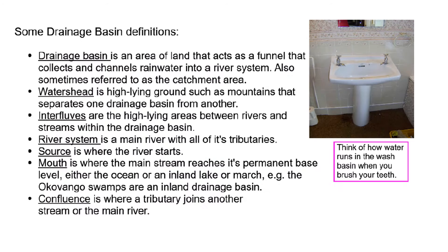If you go to the next slide, we've got the definitions here. We've first got the drainage basin itself. I like this term — catchment area — because it really says what it is. It's the space that catches all of the water for that particular river system. The watershed is the high-lying area that separates one drainage basin from another.